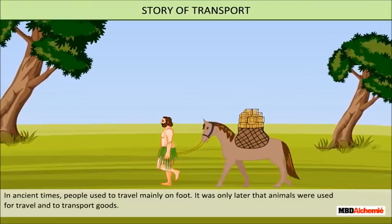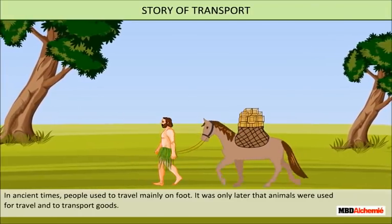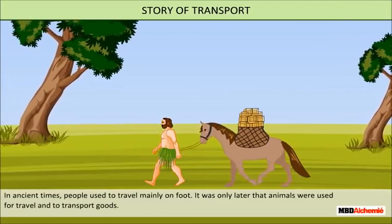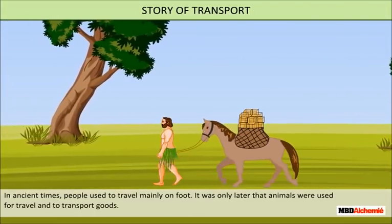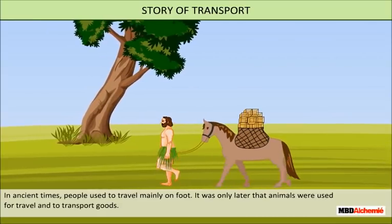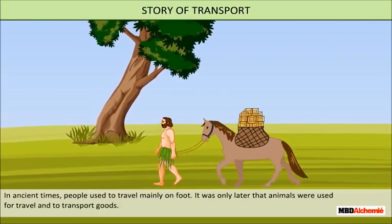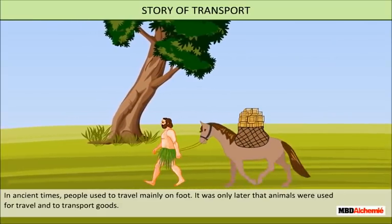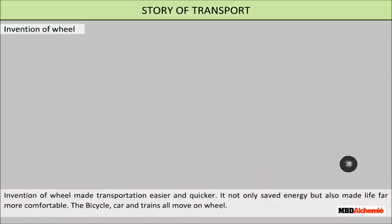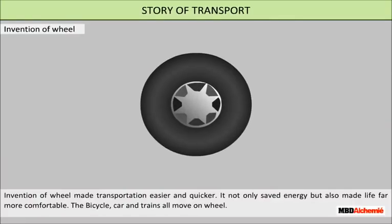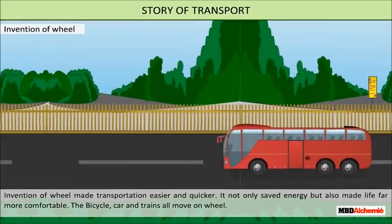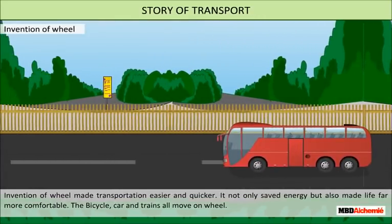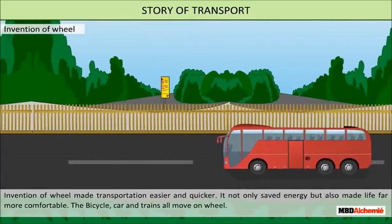In ancient times, people used to travel mainly on foot. It was only later that animals were used for travel and to transport goods. The invention of the wheel made transportation easier and quicker. It not only saved energy but also made life far more comfortable.